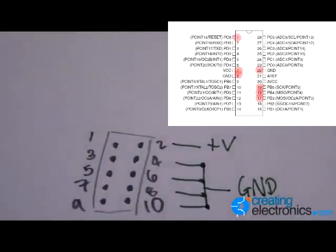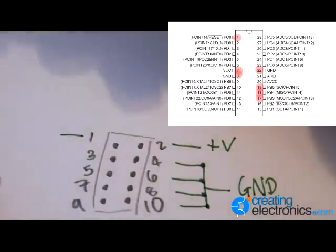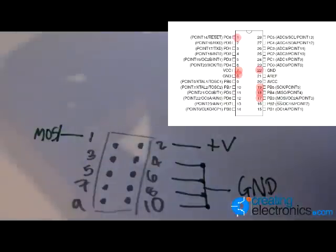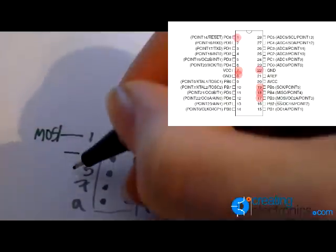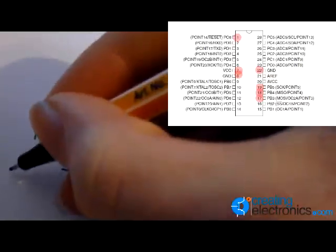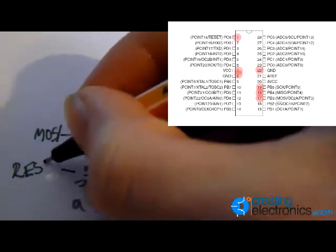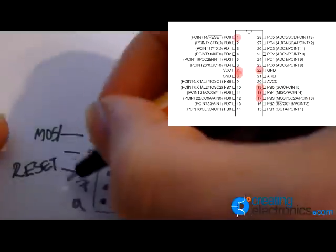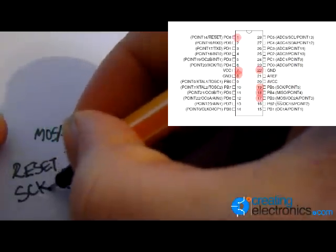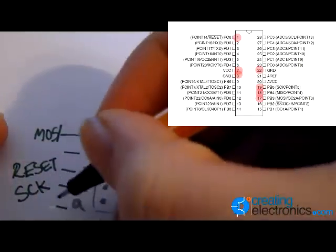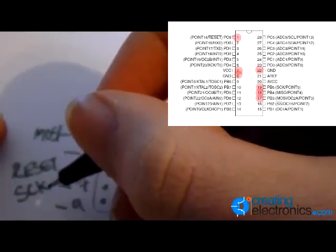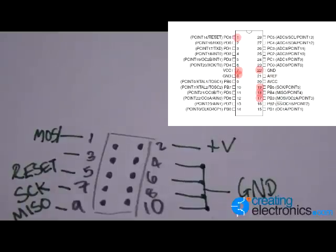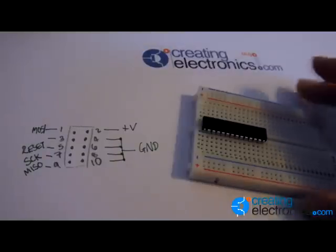Pin 1 is MOSI and that needs to go to pin 17. Three is left blank. Five is the reset pin, which on the 168 is actually pin 1. Seven is SCK and that needs to go to pin 19, as you can see. And then the final connection needs to be made to pin 18. Once you've got all those connections, you can start programming.